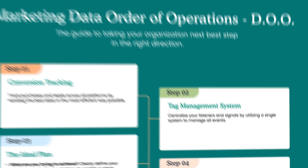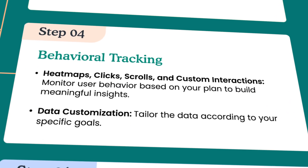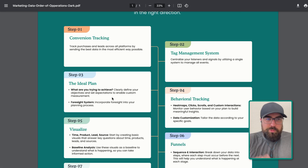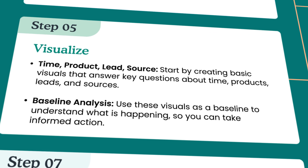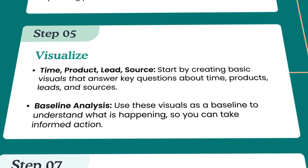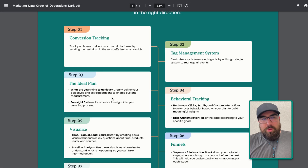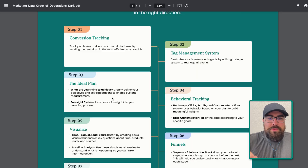We then have behavioral tracking. This is something that most people overlook — this is where you can track your scrolls, your clicks, your intention. And then step five, you need to visualize. This is where you take data and break it down by time, by product, by lead, by source. We call these your 'by questions.' Revenue by date, revenue by product, revenue by source, revenue by lead — those allow you to dive in and start taking action. That is steps one to five.